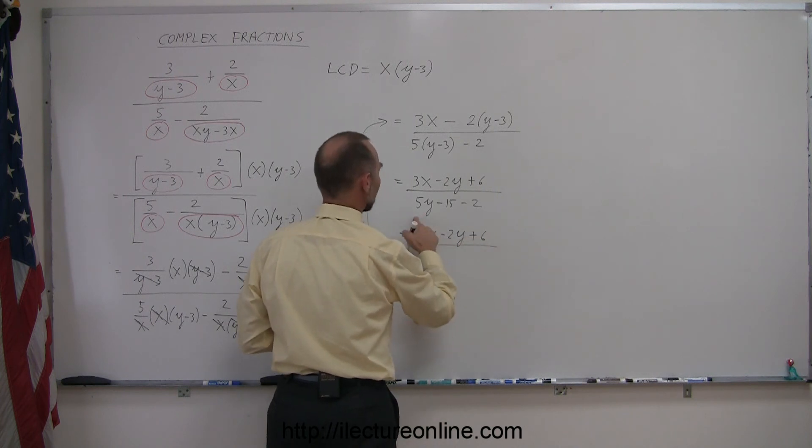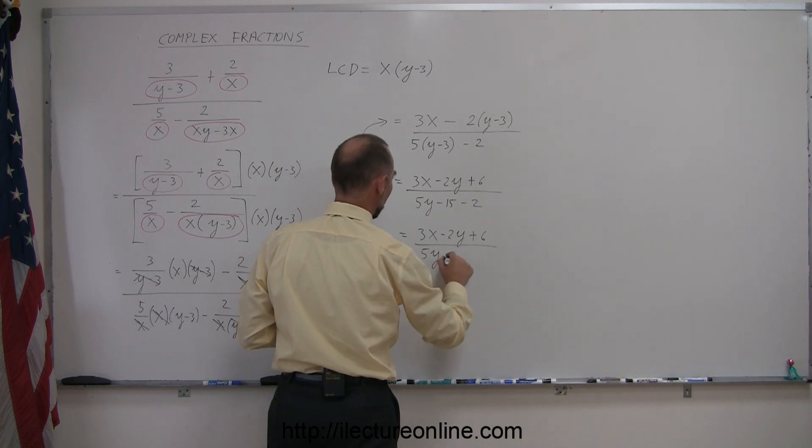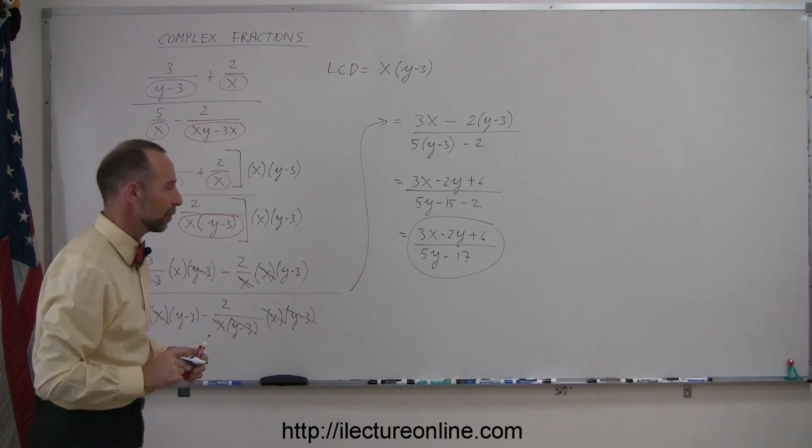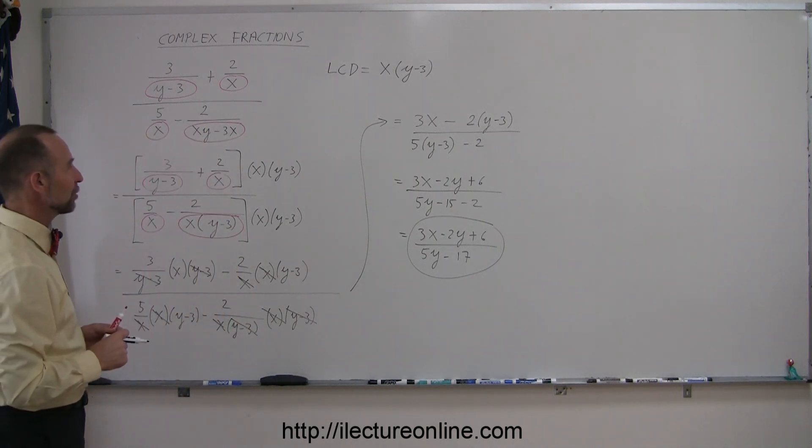nothing more to do, over here, oh nothing more, oh no, I can collect those two, so I have 5y minus 17, and that's about as simple as you can make this particular fraction. So that's how you do that.